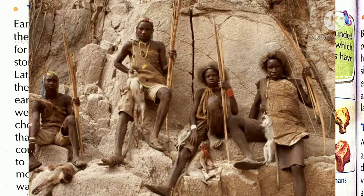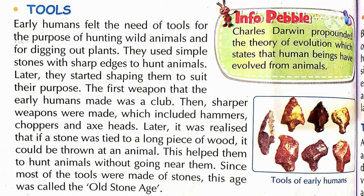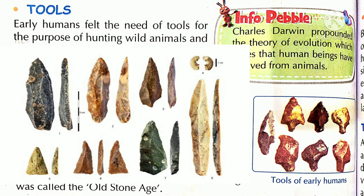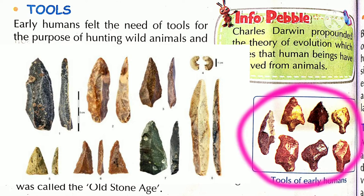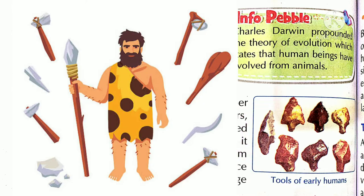Unhoney hunting karni ke liye kuch tools ki zaroorat hoi. Kya unke pats gun thay? Nahi. Unke pats kuch bhi nahi thay pehle. Unhoney patsar se tools banaye, hathiyar banaye. Sabse pehle unhoney patsar ka upkaran banaya — hunting ke liye aur gadda khodne ke liye.